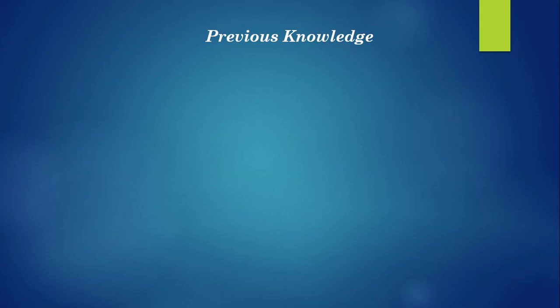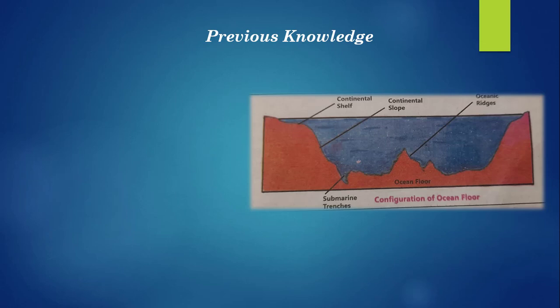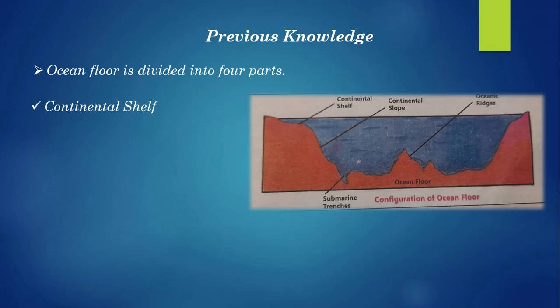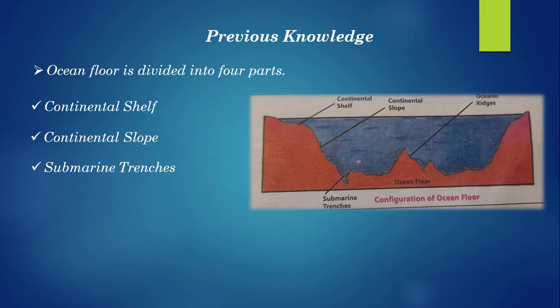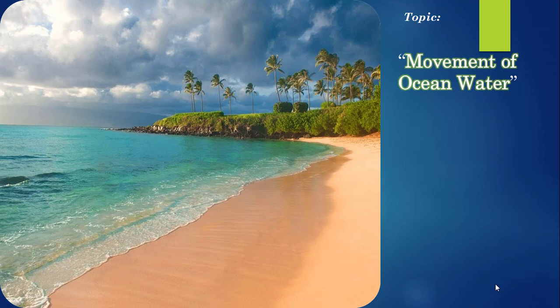Before we move on to today's lesson, let's review our previous lesson. We learned that the ocean floor is not uniform — it is divided into four parts. The shallow part of the sea adjacent to coastal areas is called the continental shelf. The ocean floor has a steep slope descending into the deep ocean called the continental slope. The deepest part is called submarine trenches, and a long, non-ending ridge of volcanoes is called mid-oceanic ridges.